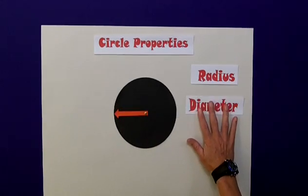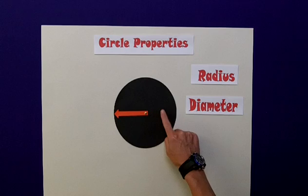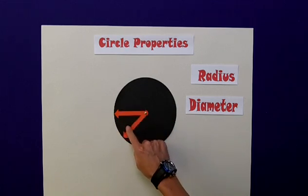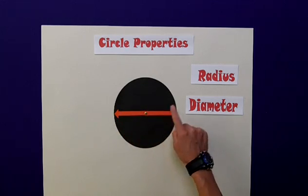The diameter of any circle is the distance across the center, ensuring that it cuts through the center point. And in fact, it is actually double the radius.